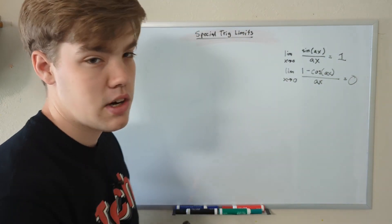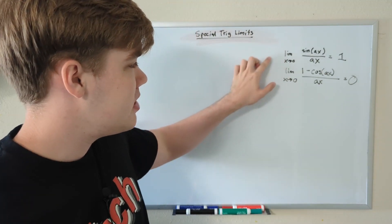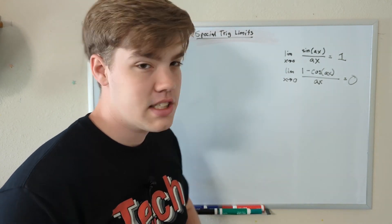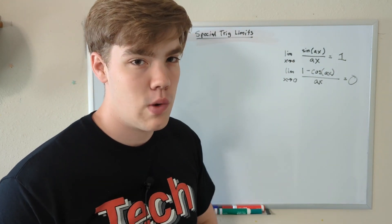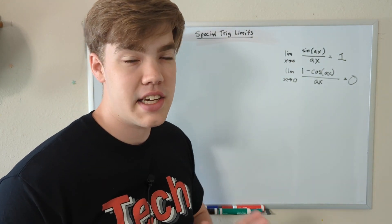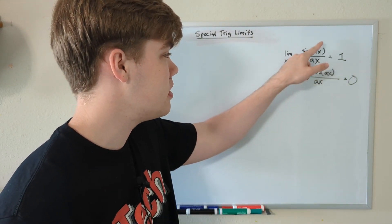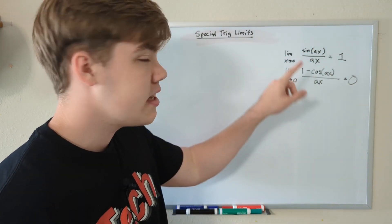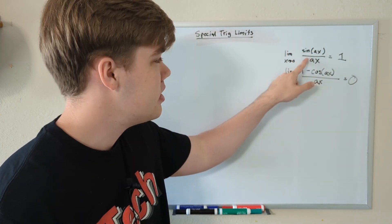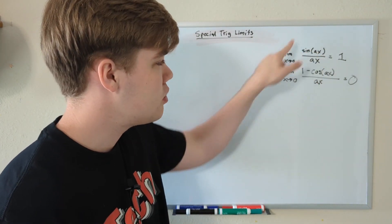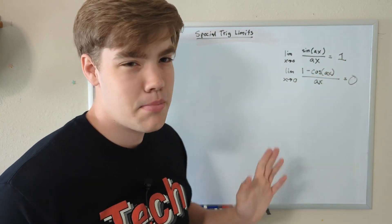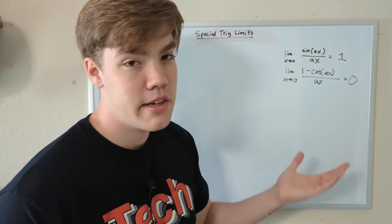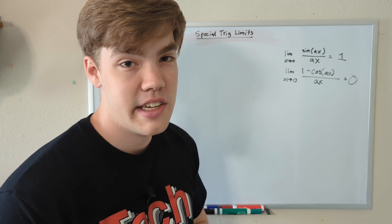Let me explain what all this means. We have the limit as x approaches zero of sine(ax) divided by ax, and that always equals one. Here, 'a' is a constant, and this constant has to be the same within the sine(ax) on top and the ax on the bottom. If we can get our limit into this form, this will always just equal one. Instead of plugging in messy numbers and doing all that work, we just already know what it equals — it's very convenient.